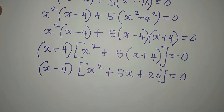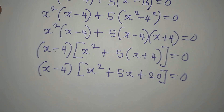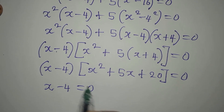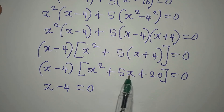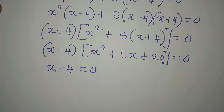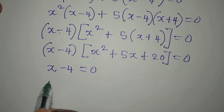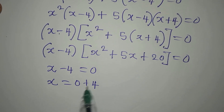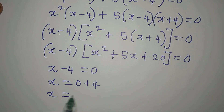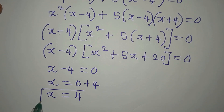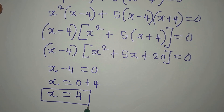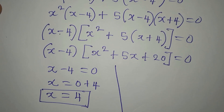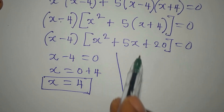Since we are multiplying two factors to get 0, either (x - 4) = 0 or (x² + 5x + 20) = 0. Dealing with the first factor: x - 4 = 0, so x = 4. This is a real solution to the problem. We will get more solutions from the quadratic equation.